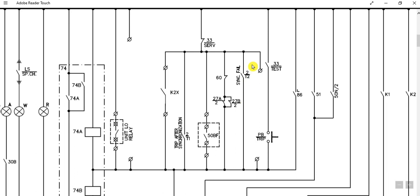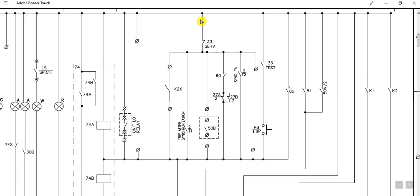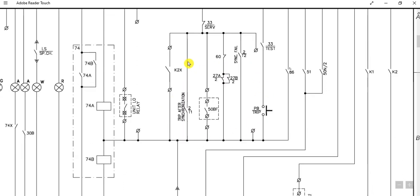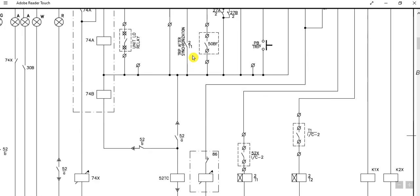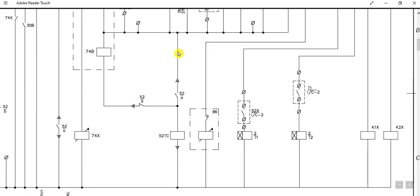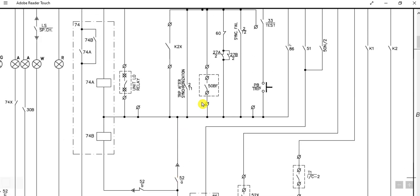When the breaker is in service position, these are the conditions. Any one of the conditions being fulfilled will energize the 52 TC trip coil of the circuit breaker and the breaker will be tripped automatically.